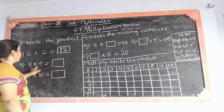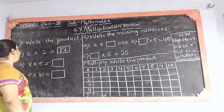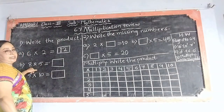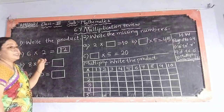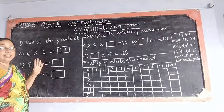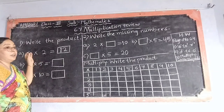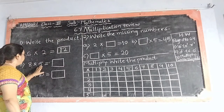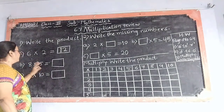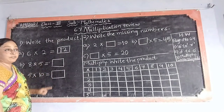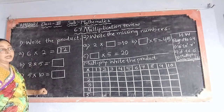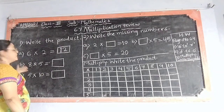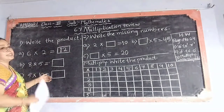Now, second one: 8 multiplied by 5. What we have to do? Tell me children, we have to read 5's table till 8. It is very important. We have to read 5's table till 8. 5 1's are 5, 5 2's are 10, 5 3's are 15, 5 4's are 20, 5 5's are 25, 5 6's are 30, 5 7's are 35, 5 8's are 40.